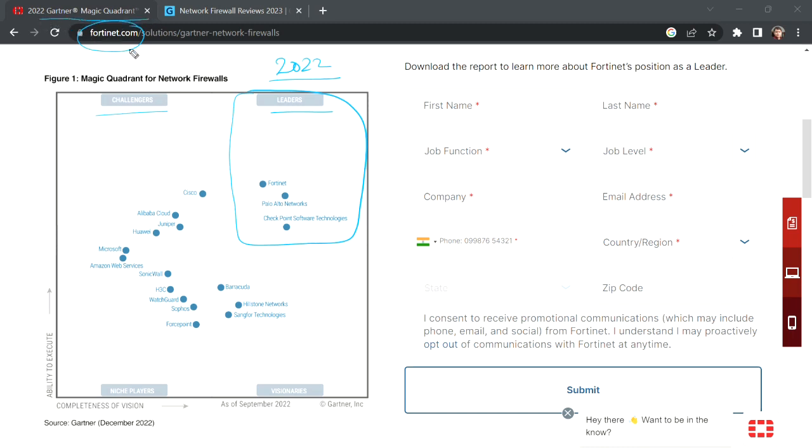Fortinet is one of the leaders, Palo Alto Networks is one of the leaders, and another is Checkpoint. These three firewalls are the leaders in the firewall segment. They can be positioned higher or lower, but they are all in the same section.